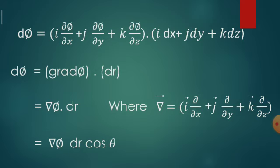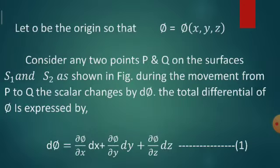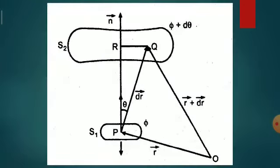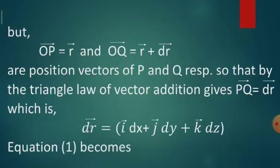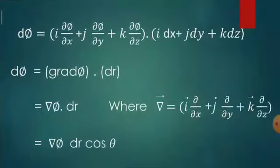In figure, N is unit vector normal to the level surface S1 at point P. This unit vector is in the direction of increasing phi. If theta is angle between PQ and N, then this equation can be written as d phi equals del phi dr cos theta.